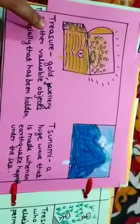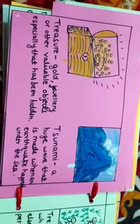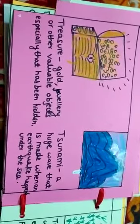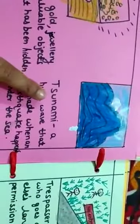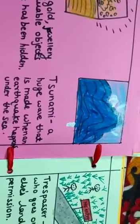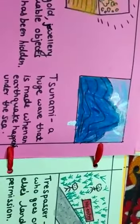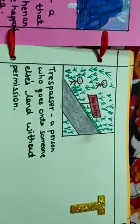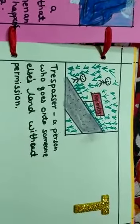Our next alphabet is T. The first word from T is treasure, that is gold, jewelry or other valuable objects, especially that has been hidden. The second is tsunami, that is a huge wave that is made when an earthquake happens under the sea. And the third word is trespasser, that is a person who goes on to someone else's land without permission.